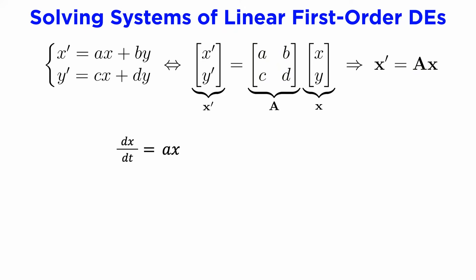If we were faced with the scalar-valued equivalent of this system, which would be x prime equals A times x, where x and A are just single variable quantities, we know that the solution to this would be of the form x of t equals e to the A times t, times a constant which will be equal to the initial value of x at t equals 0.